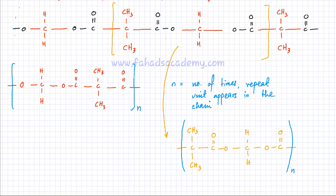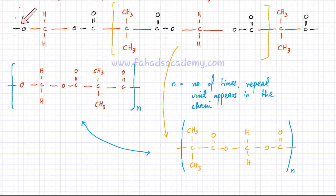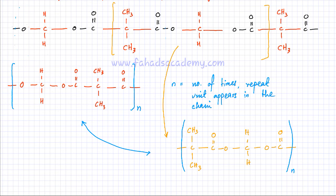These two repeat units are identical — they are exactly the same, with no difference except the starting point. The first repeat unit started at this point; if I start at a different point, I end at a different point, but the repeat unit is exactly the same. Both of these representations are correct and both represent the same polyester.